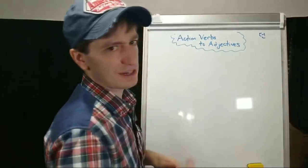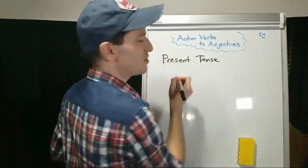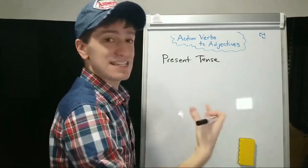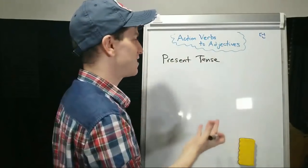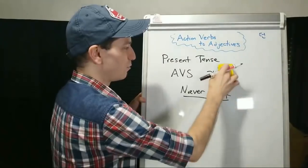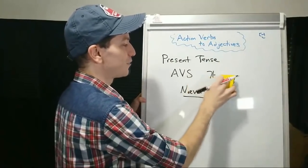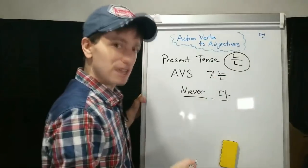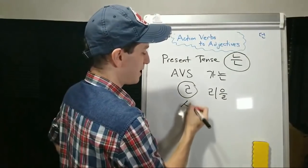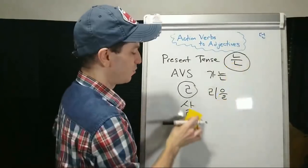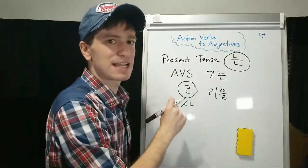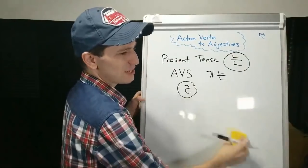The first form we're going to talk about is present tense — present just means right now, currently. A person who likes Korea, a cat that is pretty. To make the present tense, you take the action verb stem — for 가다, remove the 다 at the end and now you have the verb stem. Then you attach 는 and you're done. With one exception: if the verb stem ends in 리을, for example 살다 — to live — you remove the 리을 before adding the ending. This is the same for all three tenses today: present, past, and future.